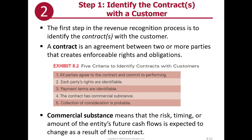There are a couple things you should notice about these five criteria. First, these are different from what you learned about in contract law. Second, there's nothing required to be written. Third, that commercial substance line is a little bit different — basically what it means is that there's something economically going on. It's defined officially as the risk, timing, or amount of the entity's future cash flows is expected to change as a result of the contract.